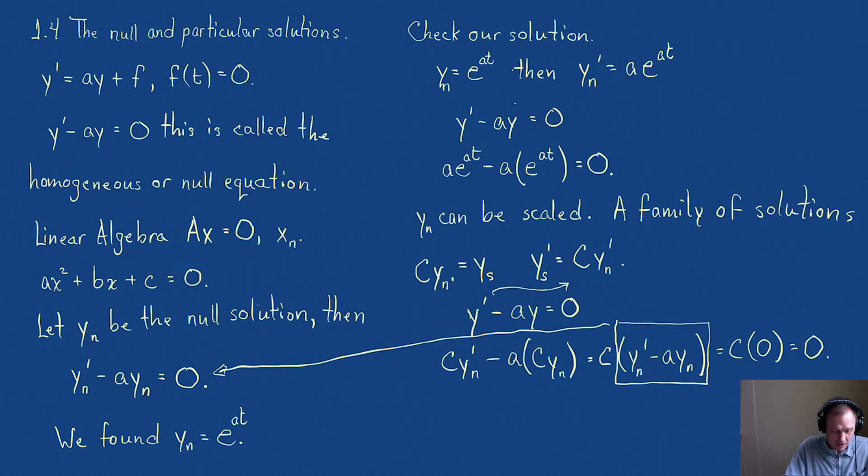Now let's add one more piece, the particular solution. Let y_p be the particular solution. And here's the key part: y_p arises when f, that input function, when f is not zero.